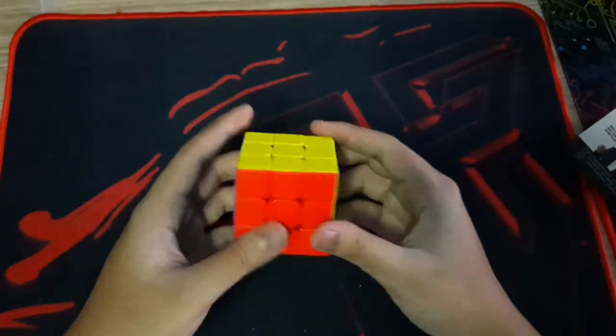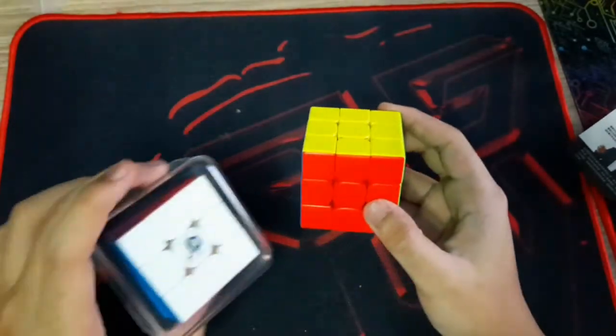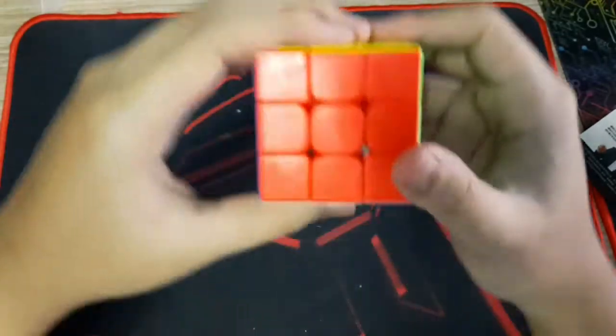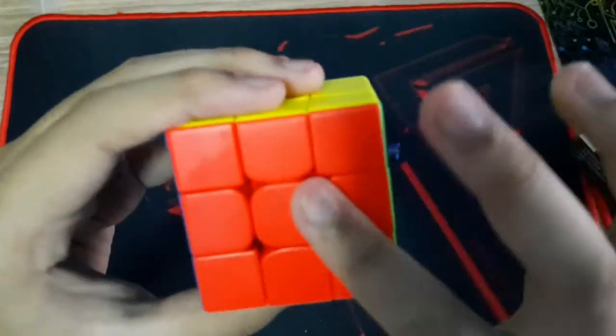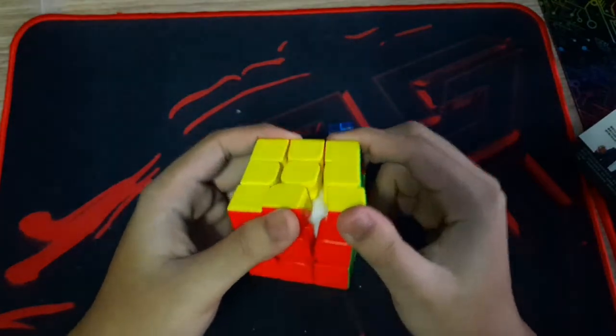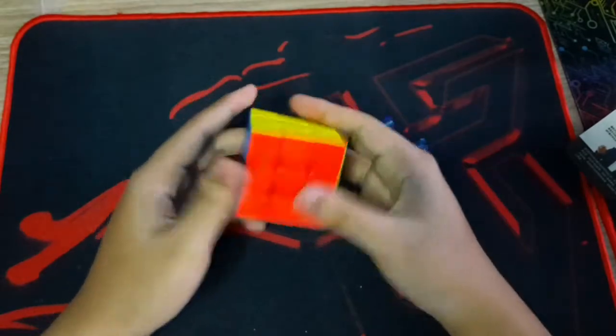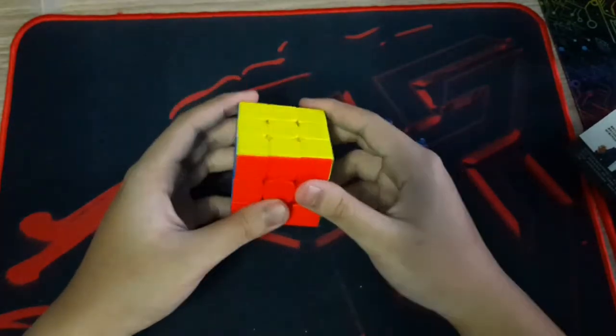My first impression is that this cube is a little bit heavier than my Valk Elite. It has a matte finish as you can see here. There's a lot of blue on the side. Let's do some first turns.